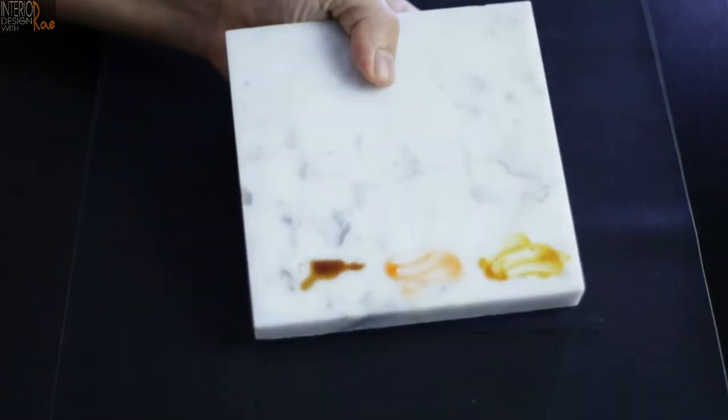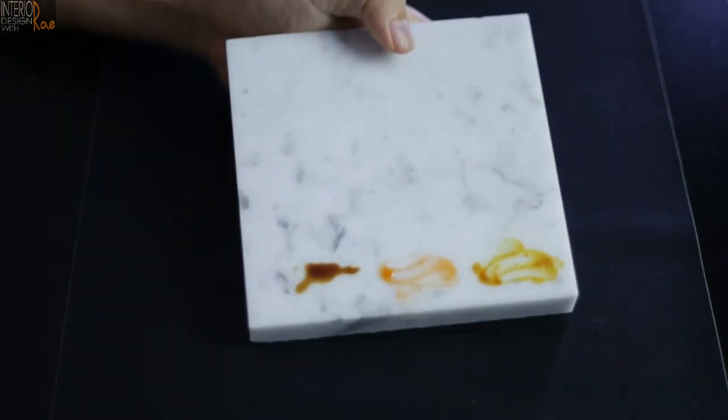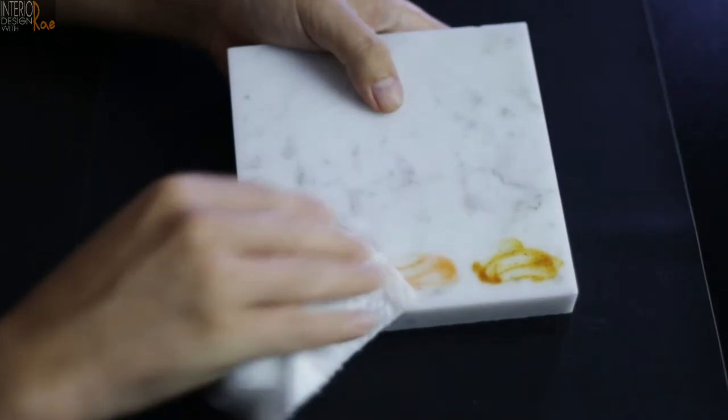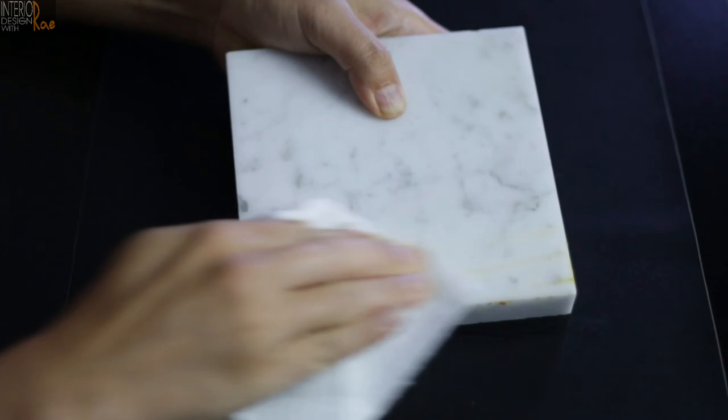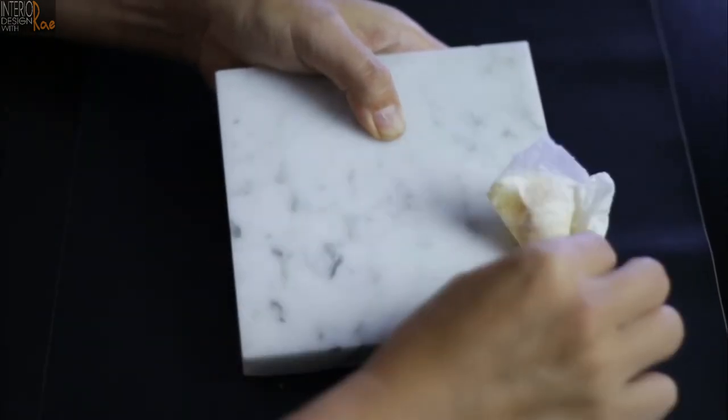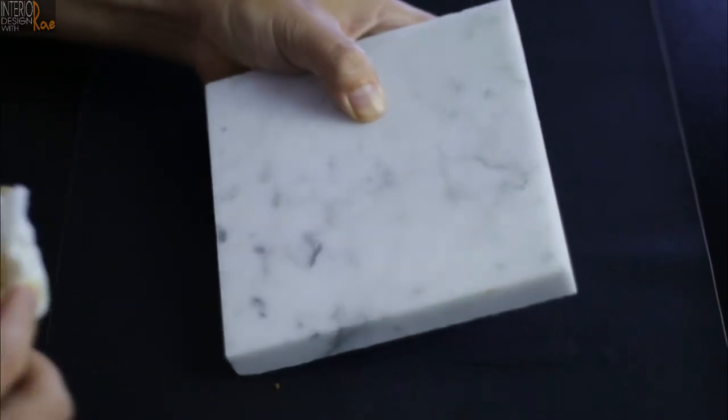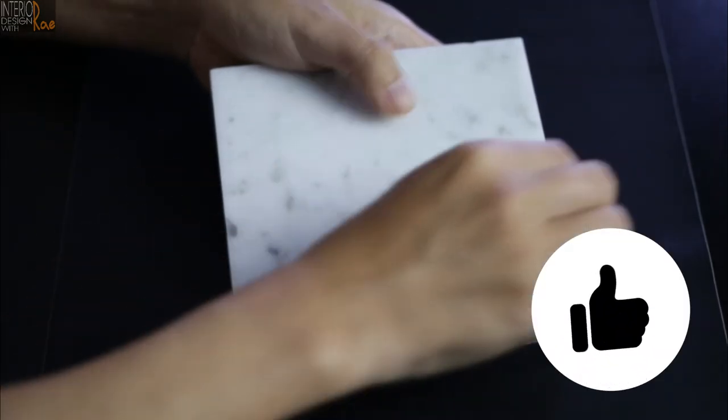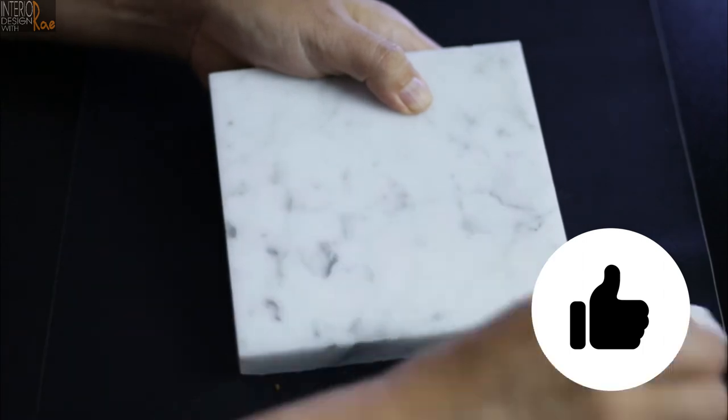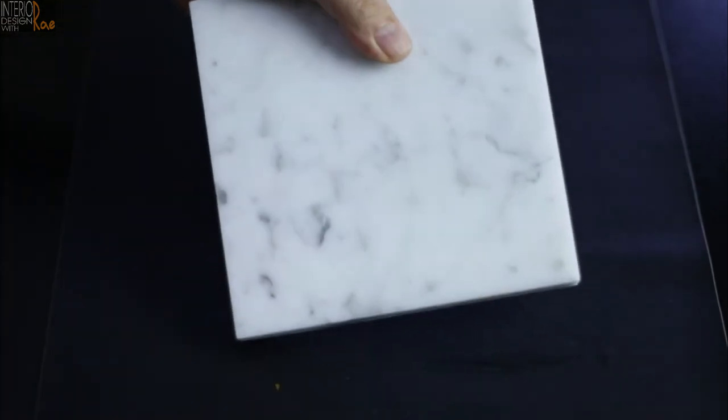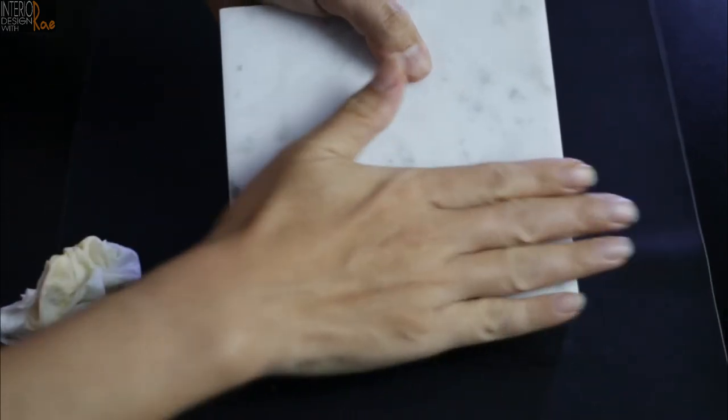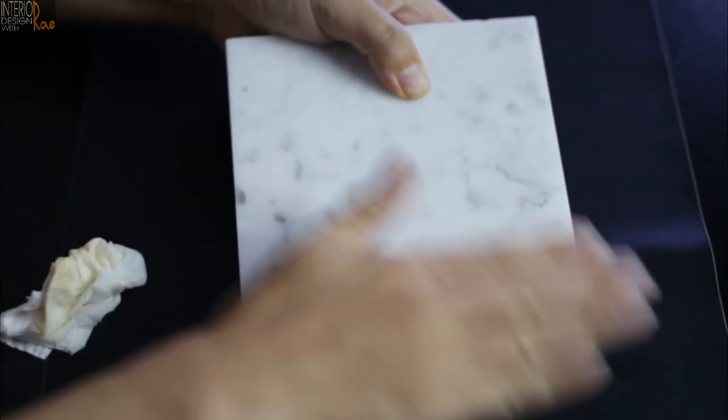So lastly would be the porous marble. Let's see whether it really stains. Hmm hmm, wow. I'm impressed with this marble as well. It doesn't stain at all, still looks like, you know, original.